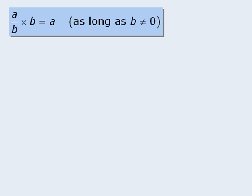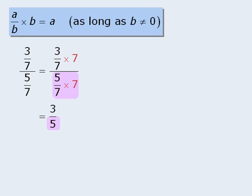We can also use this rule to simplify strange fractions, such as this one. Since the fractions in the numerator and denominator both have 7 as their denominator, let's see what happens when we multiply top and bottom by 7. First, 3 sevenths times 7 is equal to 3. And next, 5 sevenths times 7 is equal to 5. So our fraction simplifies to be 3 fifths.